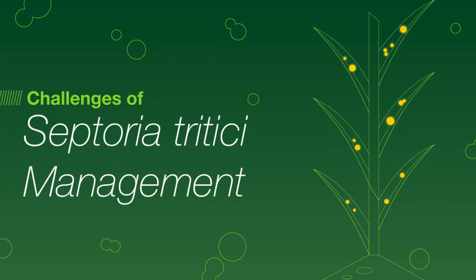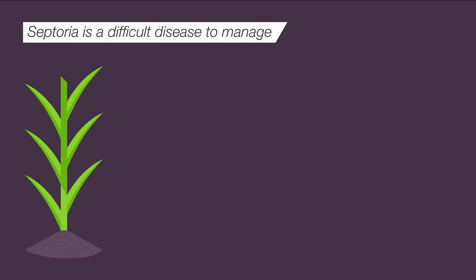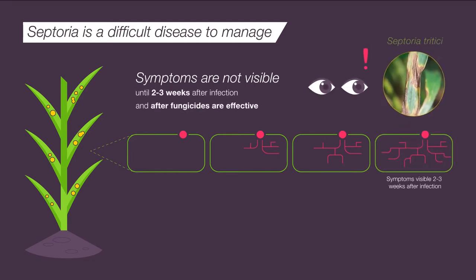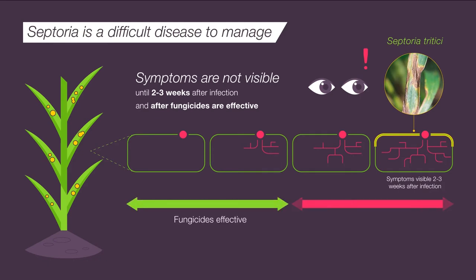What is septoria and why is it so challenging to manage? Septoria starts to develop when a fungal spore lands on the leaf, then fungal hyphae start to grow inside the leaf. The fungal hyphae continue to grow inside the leaf without any visible symptoms until two to three weeks later, when visible yellowy brown lesions with black pycnidia appear on the leaf surface. The challenging part of controlling this disease is that fungicides are only effective in the early stages of this infection cycle, and different products and rates are appropriate depending on how far through this infection cycle you are.